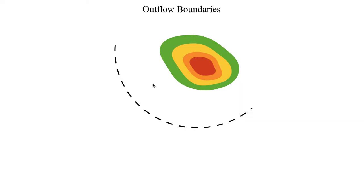From a top-down perspective, an outflow boundary is typically depicted by a series of black dashes — a black dashed line. The thunderstorm that produced it will be in the process of decaying, and the boundary will be moving radially outward away from the thunderstorm as time progresses. If this occurs early enough in the day, the sun can heat up the cold air that is part of the outflow boundary, which can slow it down and also make the atmosphere unstable again — even on the cold side — potentially allowing thunderstorms to reform.